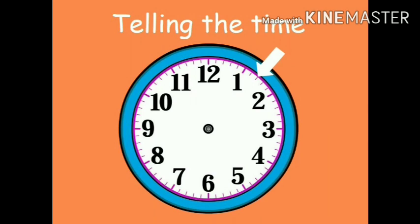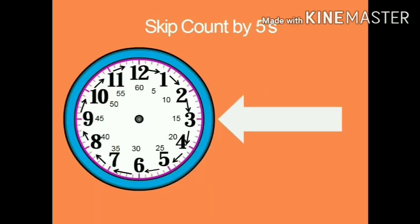The lines around the edge are minutes. Can you see the small lines between 12 to 1, 1 to 2, 2 to 3? Those small lines are minutes. There are 60 minutes marked on the clock. This is because there are 60 minutes in one hour. One hour is equal to 60 minutes.